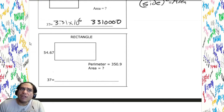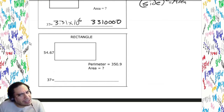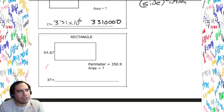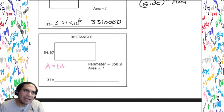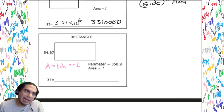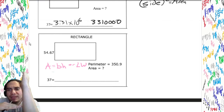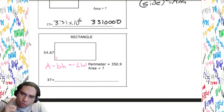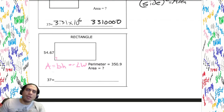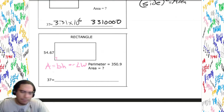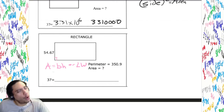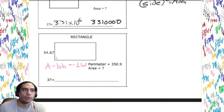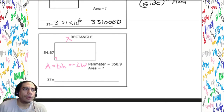Now for a rectangle — the area formula is base times height, or length times width. What matters is we have two perpendicular dimensions — a right angle — and we multiply those two sides touching that right angle. We didn't have to do that for a square since all sides were the same, but for a rectangle we must multiply base and height separately.